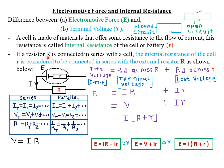If a resistor R is connected in series with a cell, then the internal resistance of the cell, small r, is usually considered to be connected in series with the external resistor R, as shown in this diagram. So if you connect a cell in series with an external resistor R, the internal resistance small r will be considered to be connected in series with the external resistor R. Consider a cell with an EMF E and internal resistance r connected to an external resistor capital R, with a total current I flowing through that particular circuit.